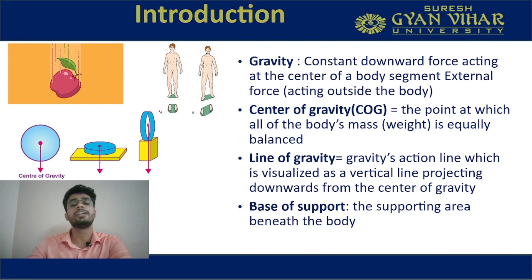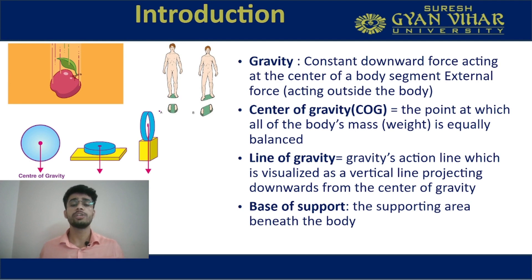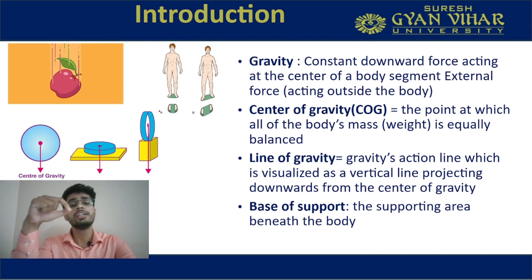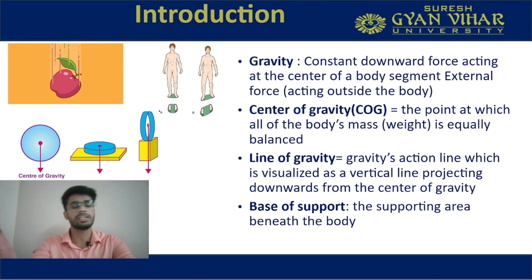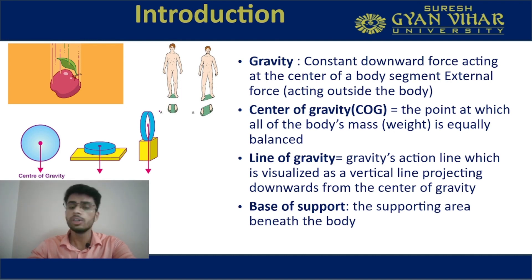There is a term called center of gravity. It is the point at which all the body's mass is equally balanced. If I want to balance any object with the help of a thread or rope, if I tie the rope at the center of gravity, I will be able to maintain the symmetrical and equilibrium position in all directions. Line of gravity is an imaginary vertical line passing from the center of gravity.